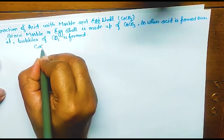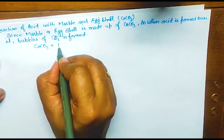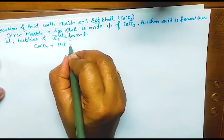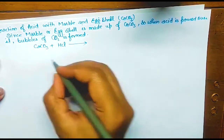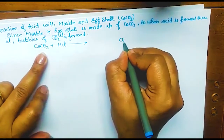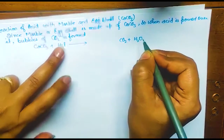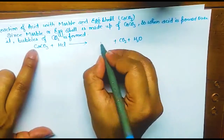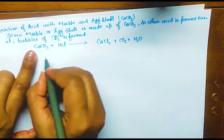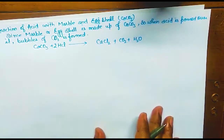The reaction: CaCO3 with any acid — HCl, H2SO4, or HNO3 — gives carbon dioxide, water, and a calcium salt as products. For example, with HCl: CaCO3 + 2HCl → CaCl2 + CO2 + H2O. Balance the equation as needed.